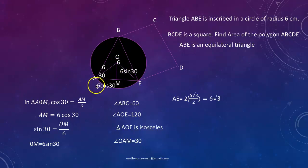Now going to triangle AOM, cos 30 is AM by 6, so AM would be 6 cos 30. And sin 30 will be OM by 6, so OM would be 6 sin 30. Now AE would be twice AM, that is twice 6 cos 30 which is 2 into 6 root 3 by 2 which is 6 root 3.